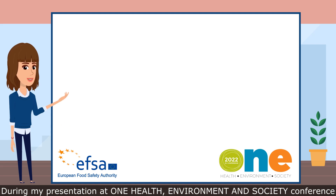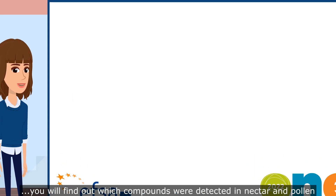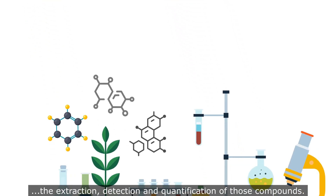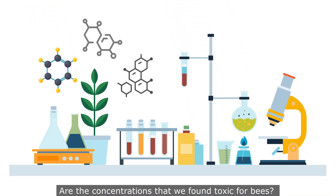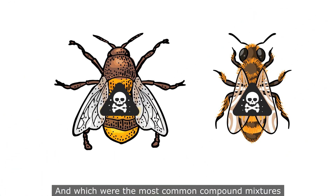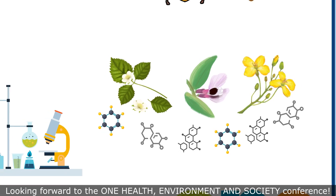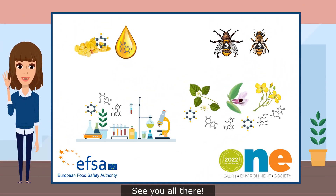During my presentation at the One Health Environment and Society Conference, you will find out which compounds were detected in nectar and pollen, and I will describe the methods that were used for the extraction, detection, and quantification of those compounds. Are the concentrations that we found toxic for bees, and which were the most common compound mixtures found in each plant species? Looking forward to the One Health Environment and Society Conference 2022 — see you all there!